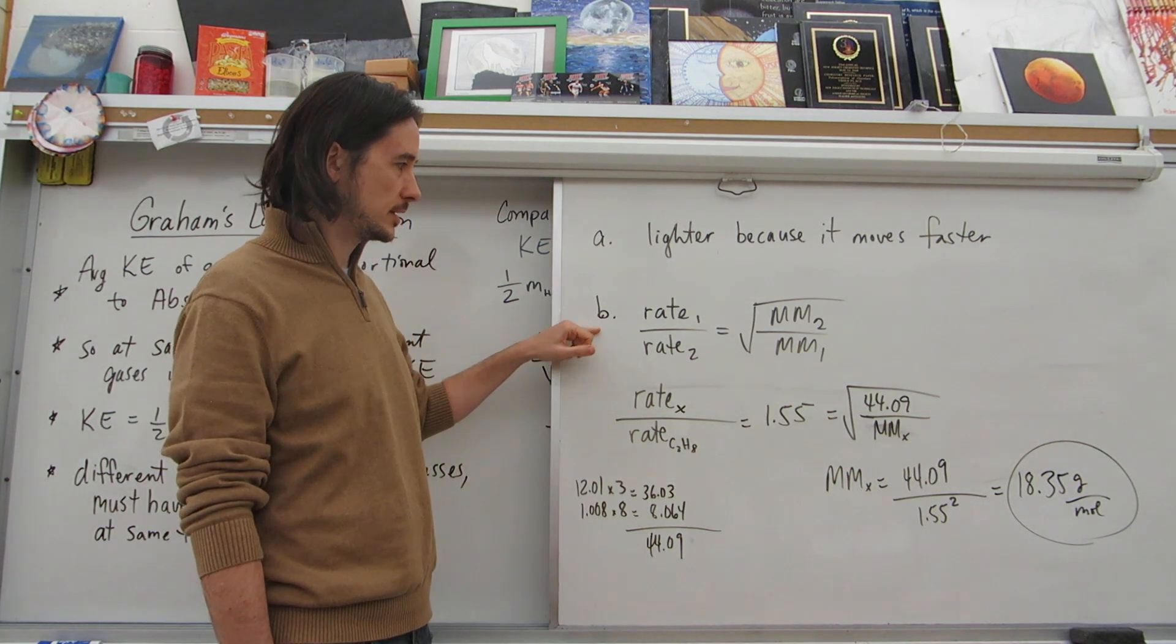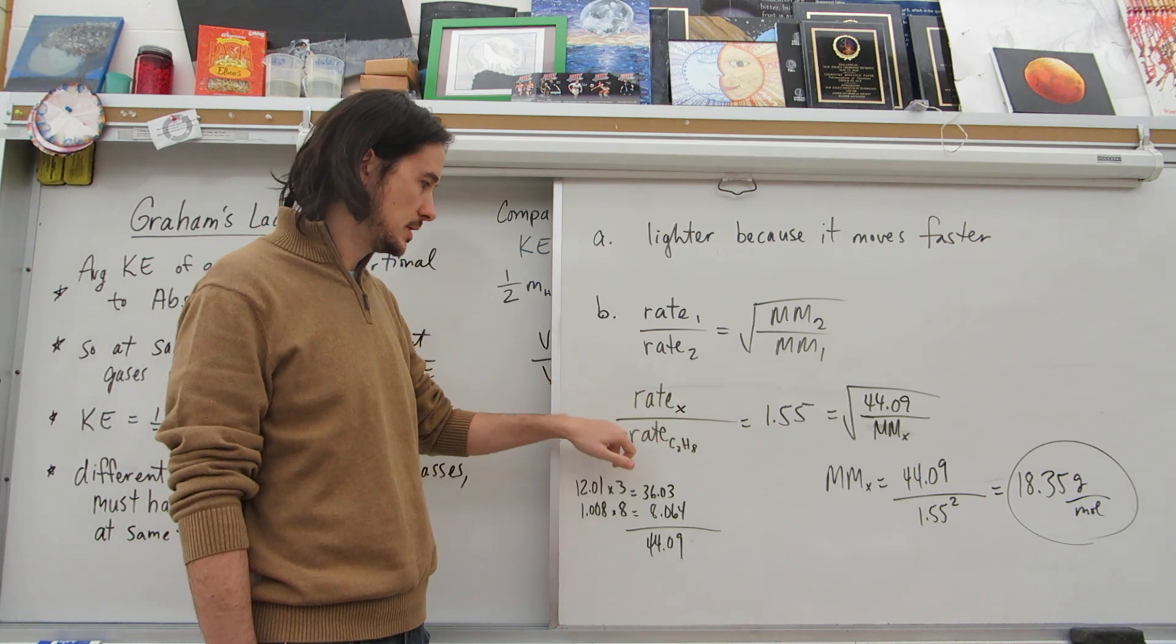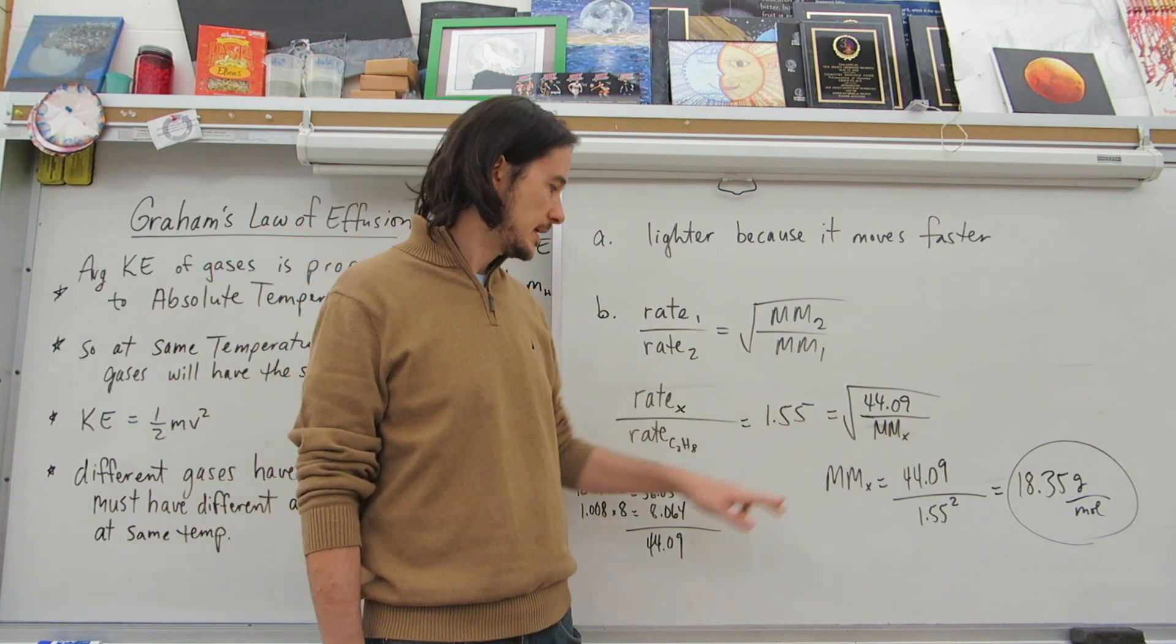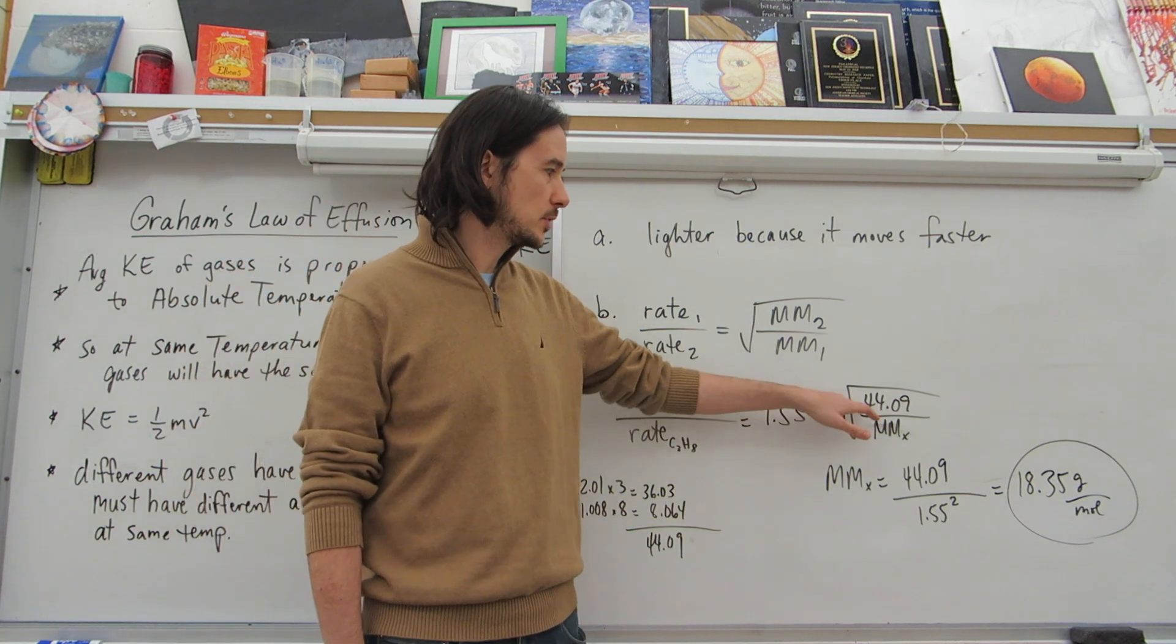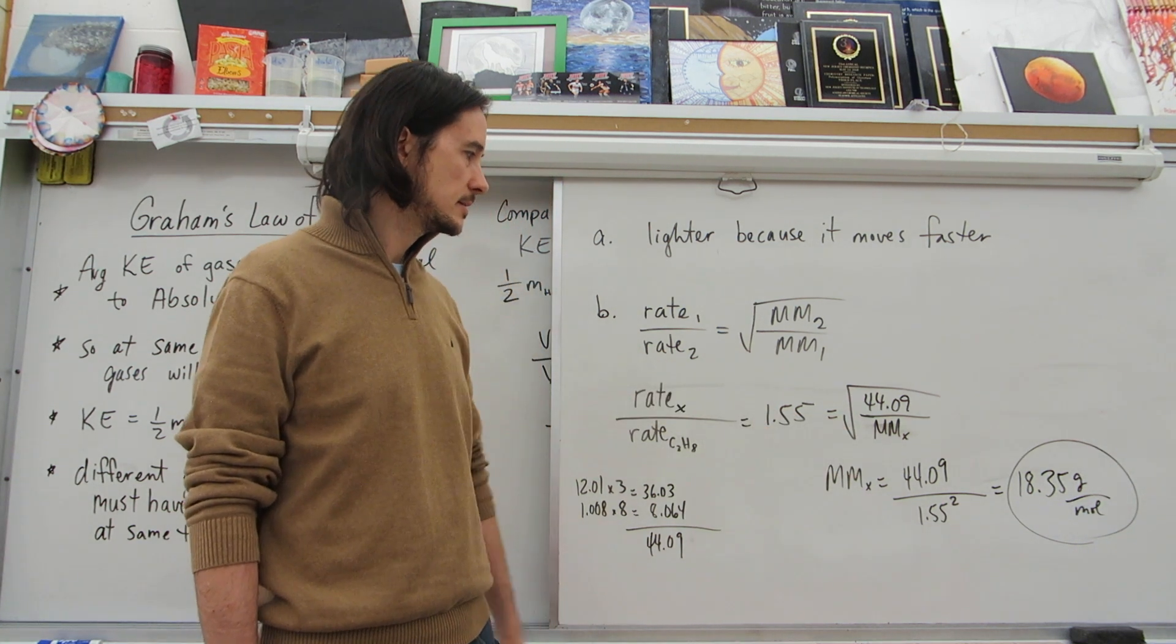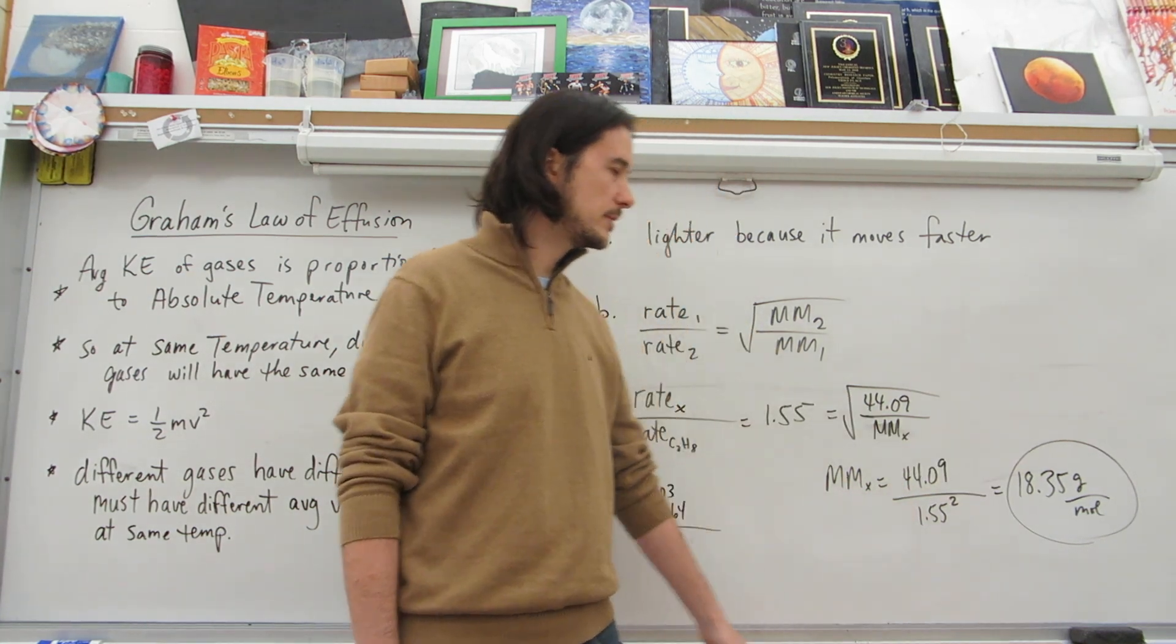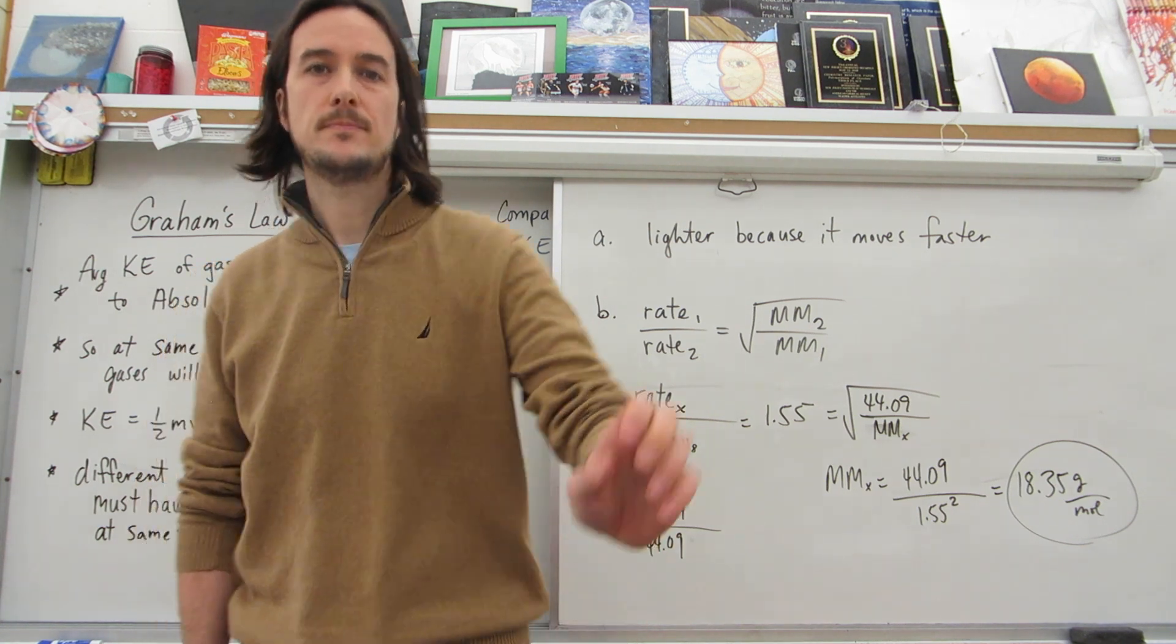The rate of X is our unknown compared to the rate of propane, C3H8 equals 1.55. And then we get the molar mass of propane, 44.09. So that's 44.09 over the molar mass of X. We rearrange again. So 44.09 over 1.55 squared, we get 18.35 grams per mole. That's the molar mass.